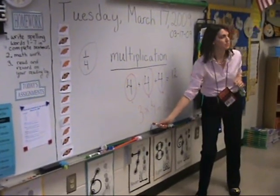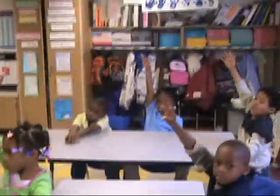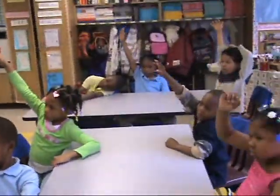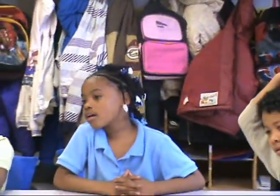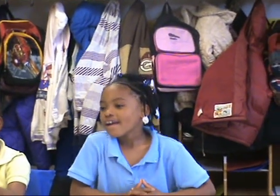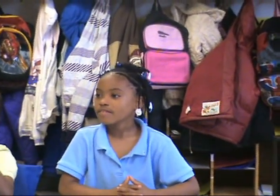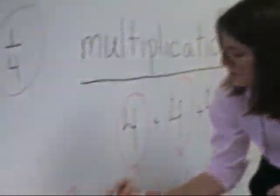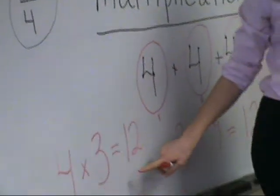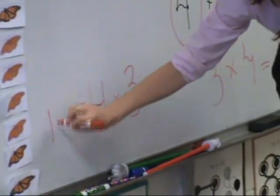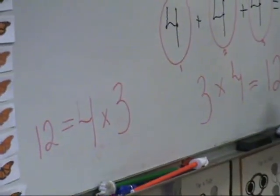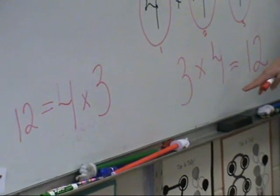Does anyone think they might know another way I can write three times four? There's a property we learned about adding that means I can change my numbers and flip them around. Brianna, can you tell me another way? The commutative property. And the commutative property tells me I can switch these numbers. I can put the equal sign on either side. Four times three is the same as three times four. That's exactly right.